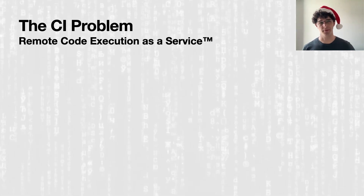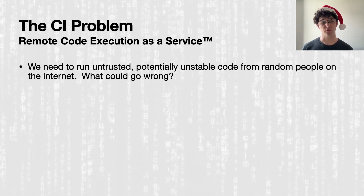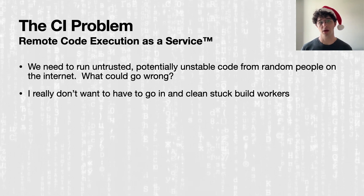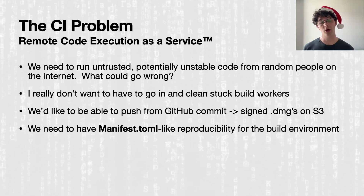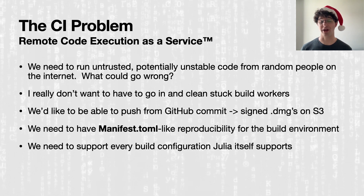One of the problems with CI is that it's basically remote code execution as a service. We need to run untrusted code, and we need to do it reliably, securely, and reproducibly. We also want it to be robust so that I don't have to go in and clean out processes that refuse to exit. We'd like a single continuous flow from a GitHub commit being pushed to signed binary packages appearing on S3. We need manifest-like reproducibility for the build environment, and we need to support every build configuration that Julia itself supports.